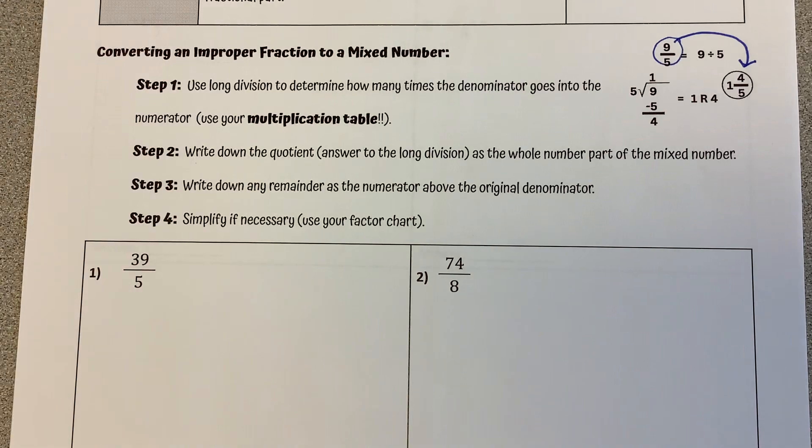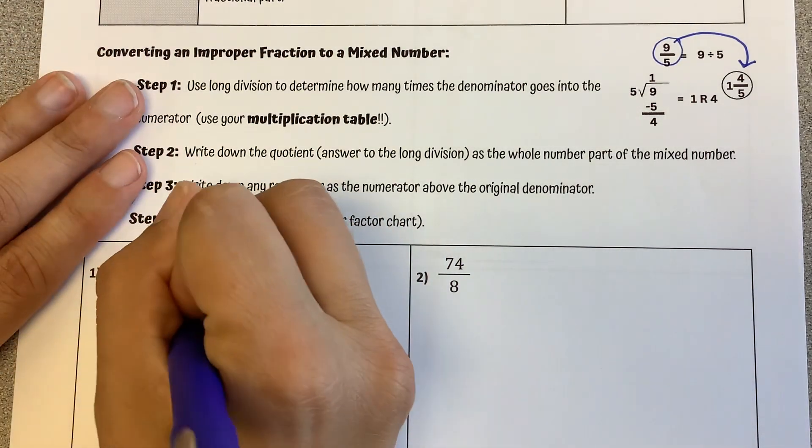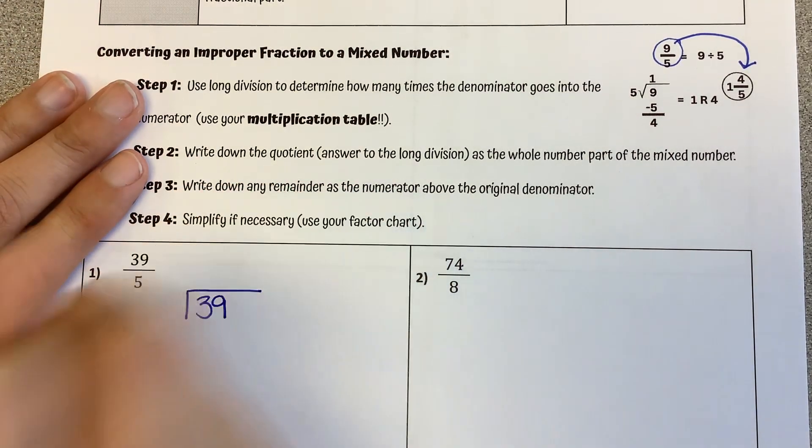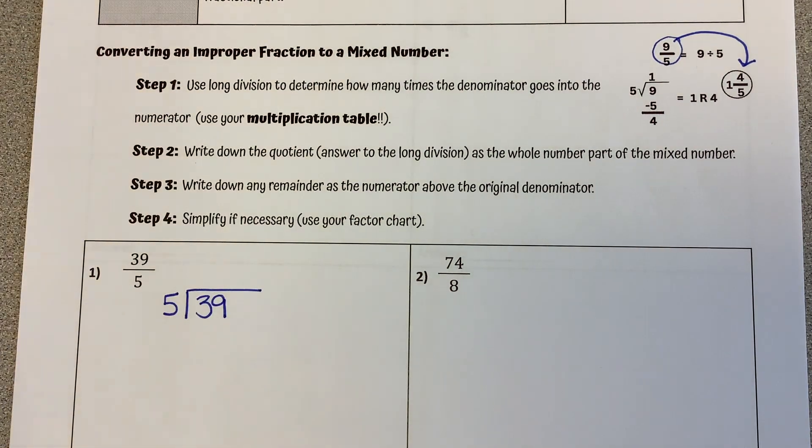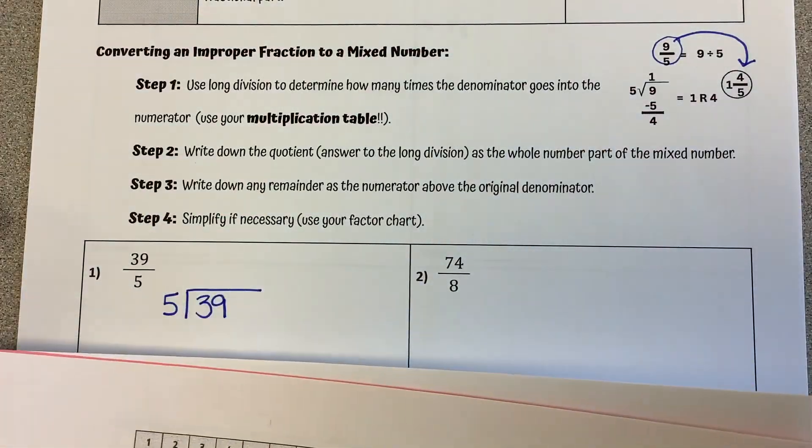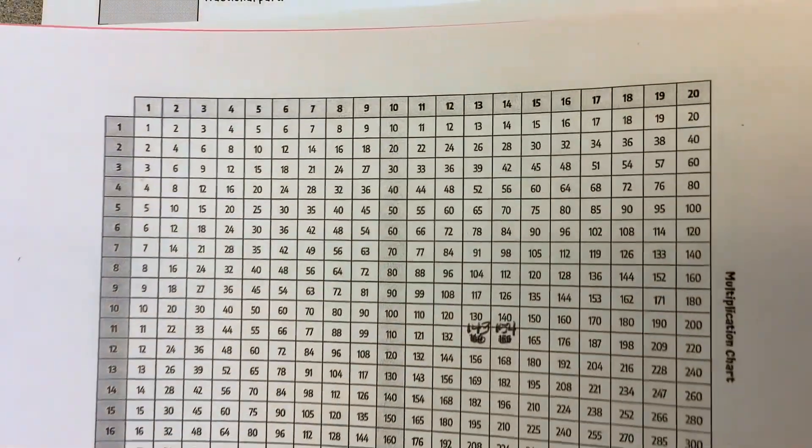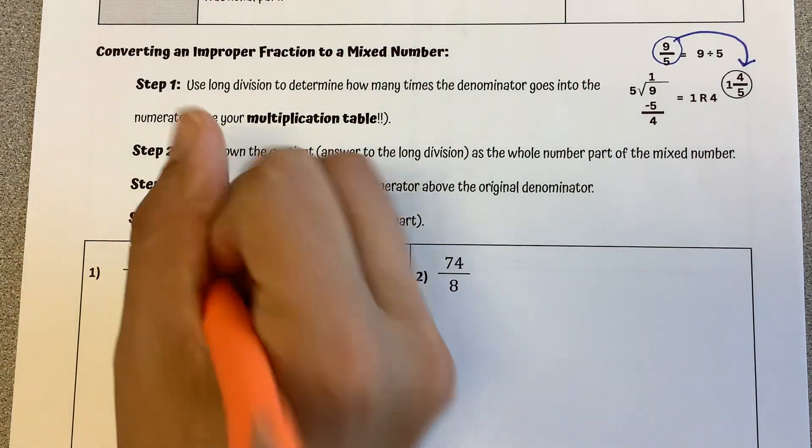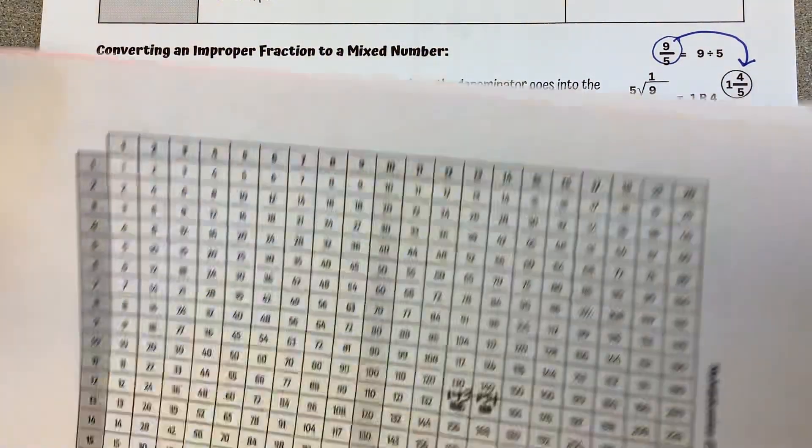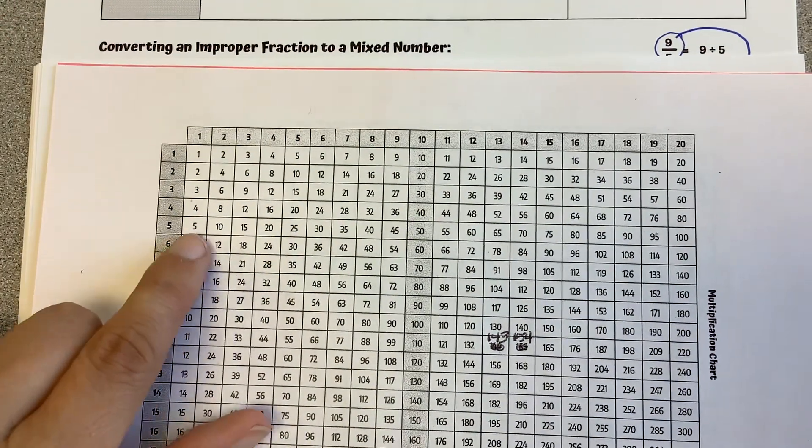So here, we've got 39 over 5. So I'm going to show some long division here. We are dividing 39 by 5. So on my multiplication chart, I can see how many times does 5 go into 3. It does not. So how many times does it go into 39?